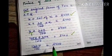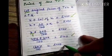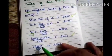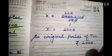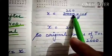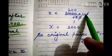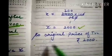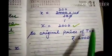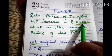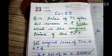So 120X by 100 equals 2400. Solving for X, the original price of the TV is Rs. 2000.